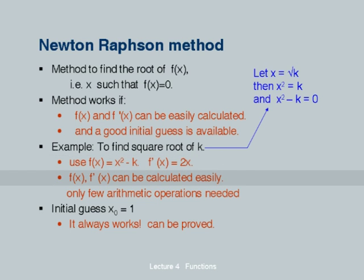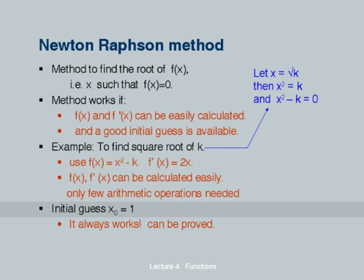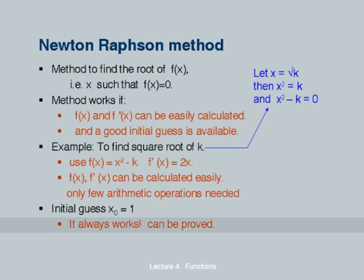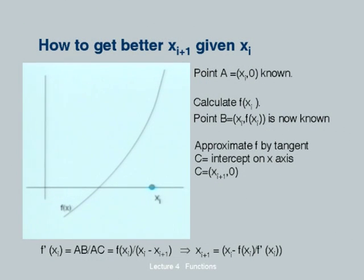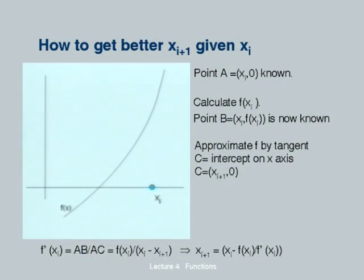f dash x equal to 2x is easily derived. We observe that f of x and f dash x can indeed be calculated easily — only a few arithmetic operations are required. We can start with an initial guess x0 equal to 1, which in this particular case always works, it can be proved. The iterative method of determining the root will begin with some initial guess, which we call the i-th value of x where i equals 0. Our job is to keep finding a better value of x.